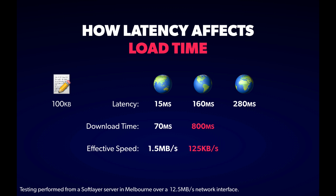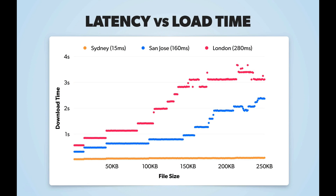A server roughly twice as far away turns out to take roughly twice as long. It seems like our download speed depends on how far away the server is, which is pretty unexpected. If you try the same test with files of different sizes, you can start to see a pattern. I ran this experiment fetching files of up to 250 kilobytes from Sydney, San Jose, and London. For files from Sydney, download time grows slowly and steadily, and since we have plenty of bandwidth, it's all really fast. However, for San Jose and London, the time increases in big discrete steps — each step roughly equal to the latency to that server: 160 milliseconds for San Jose and 280 for London.